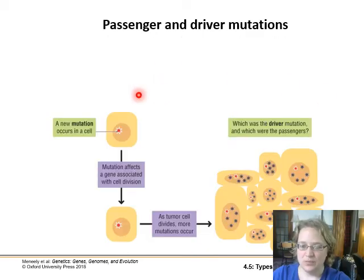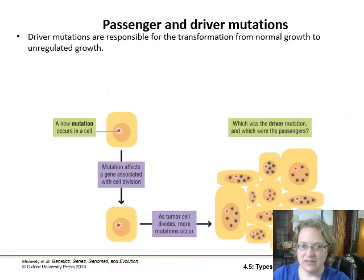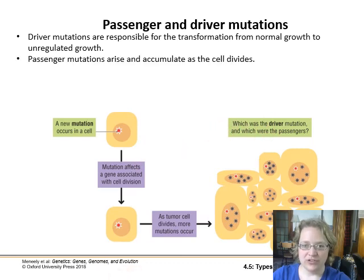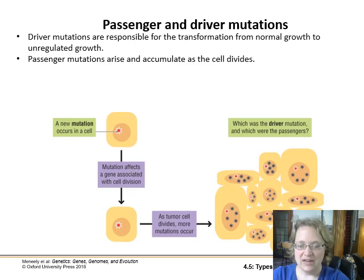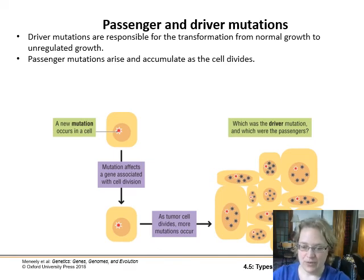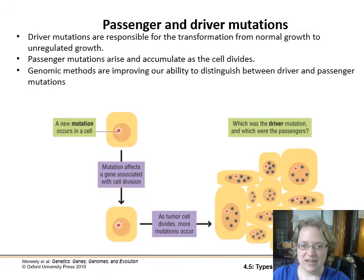A driver mutation is the one actually causing the transition from normal growth to unregulated growth. But other mutations also arise and accumulate — passenger mutations — because the cell is dividing with no checks and balances, not checking the DNA for errors. With no brakes, you're accumulating more and more passenger mutations along the way.